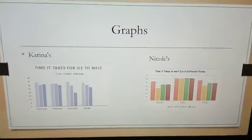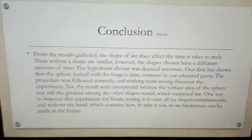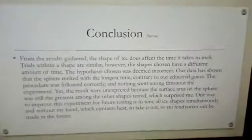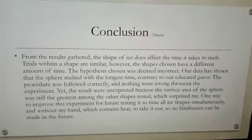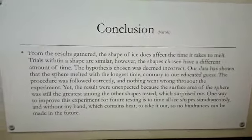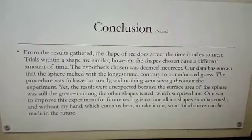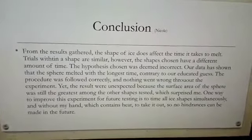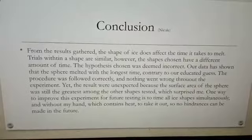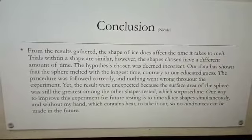These are our graphs that we made, and the conclusion is that the shape of ice does affect the time it takes to melt. Our hypothesis was proven incorrect because our data showed that the sphere actually melted for the longest time, contrary to our educated guess.